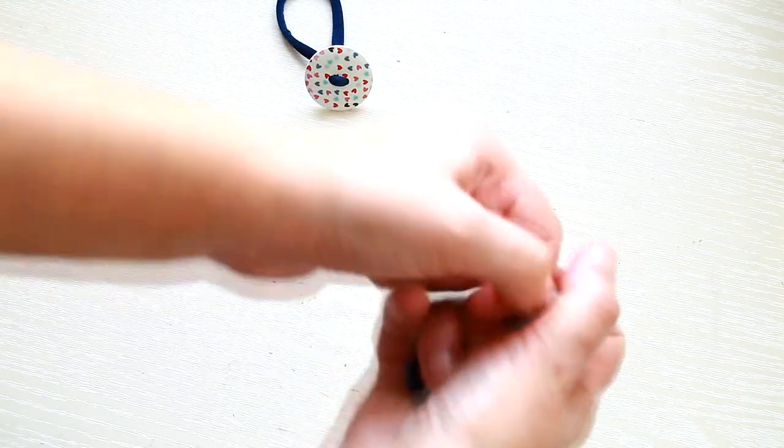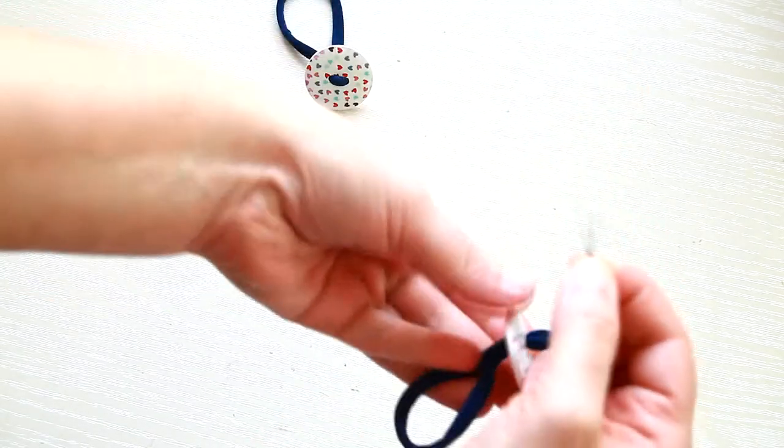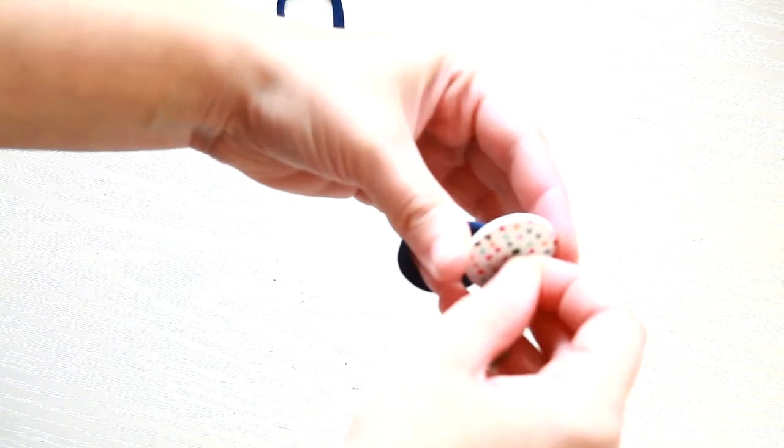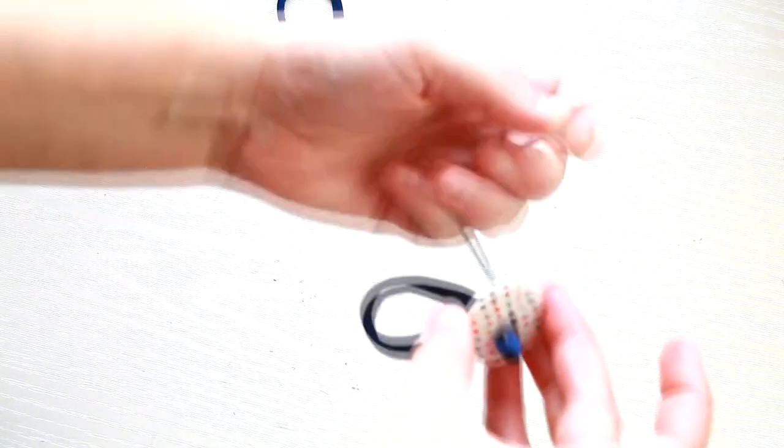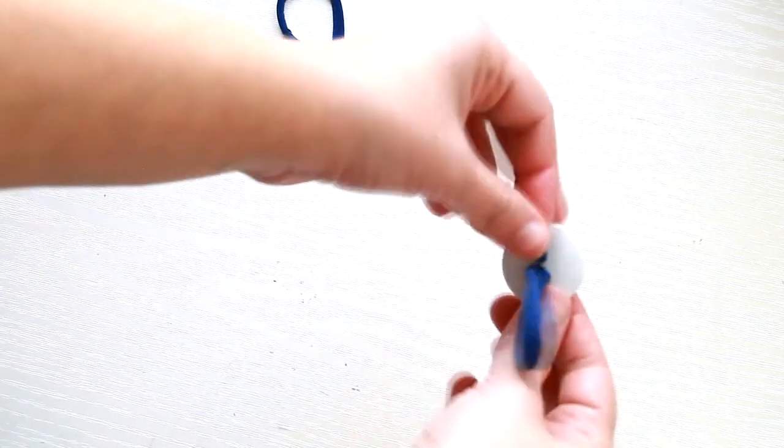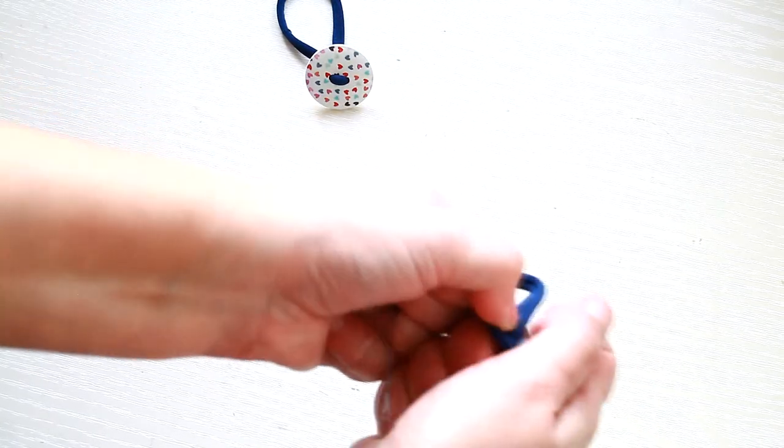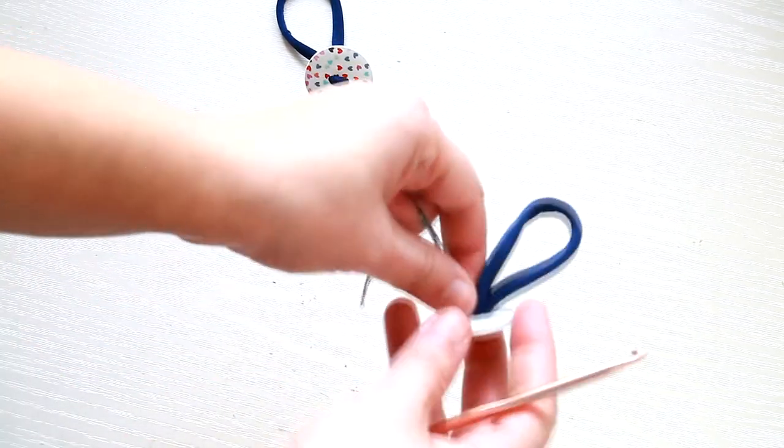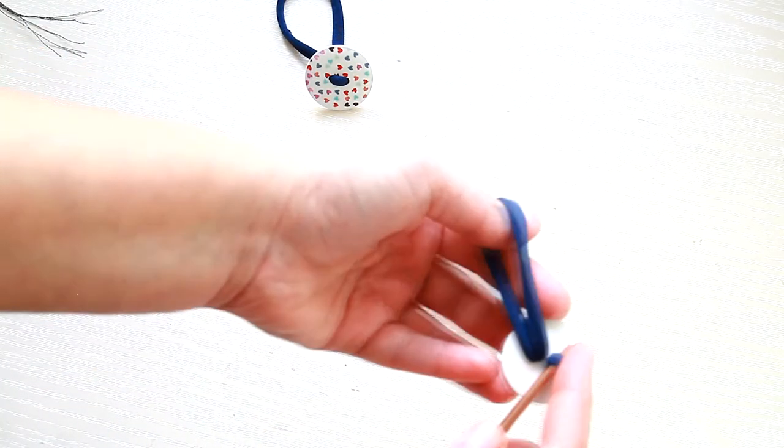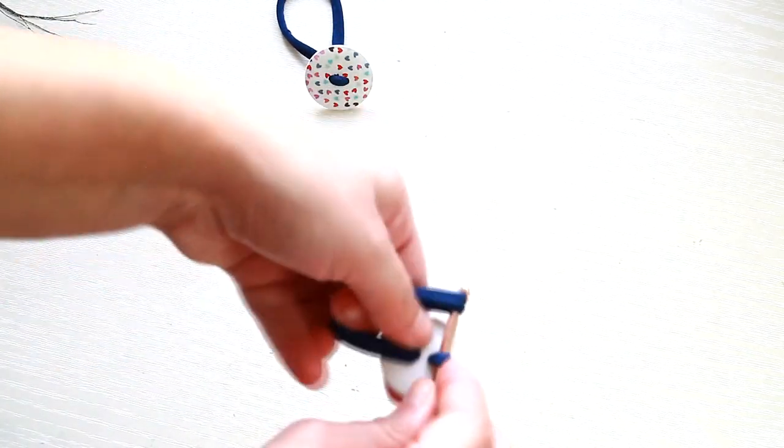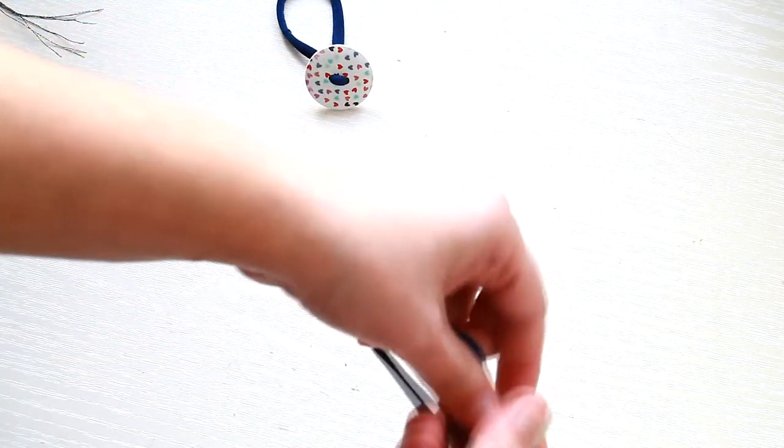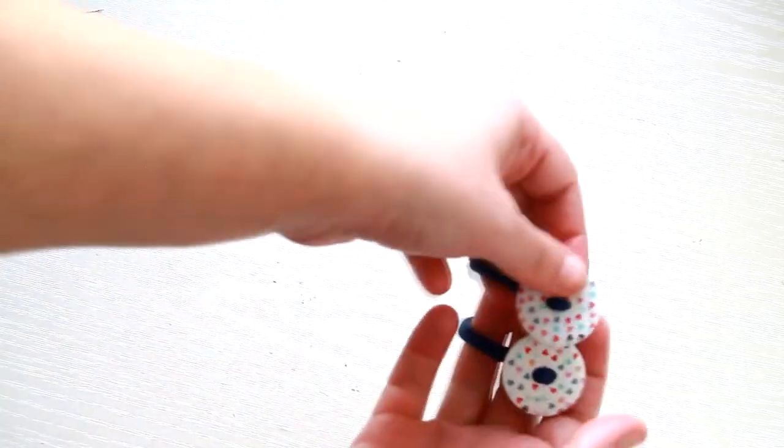Then pass the elastic through the second hole. Then I use a crochet to pull the big loop through the small one. This will create something like a knot to keep the button in place.